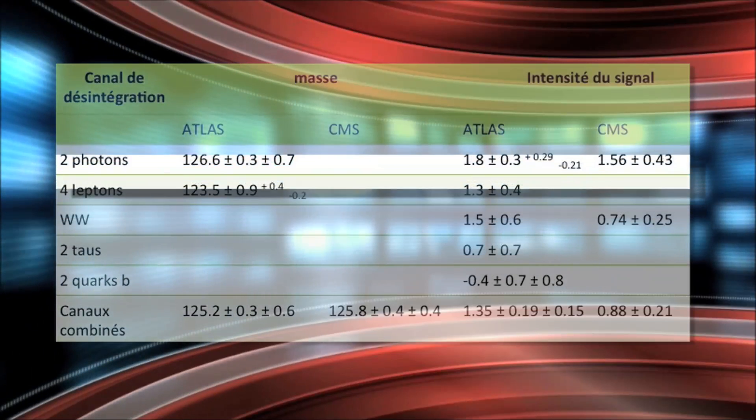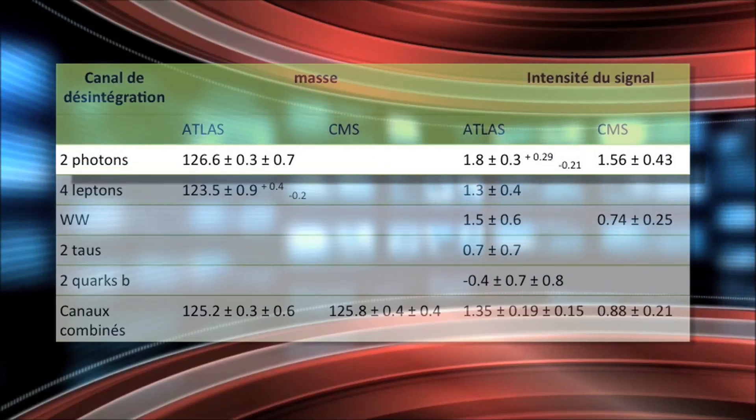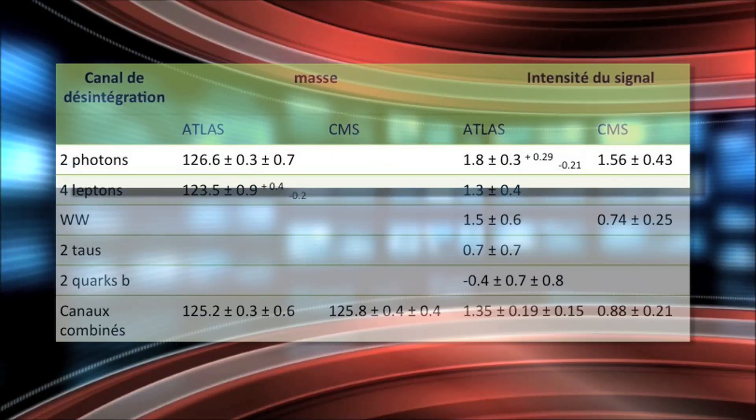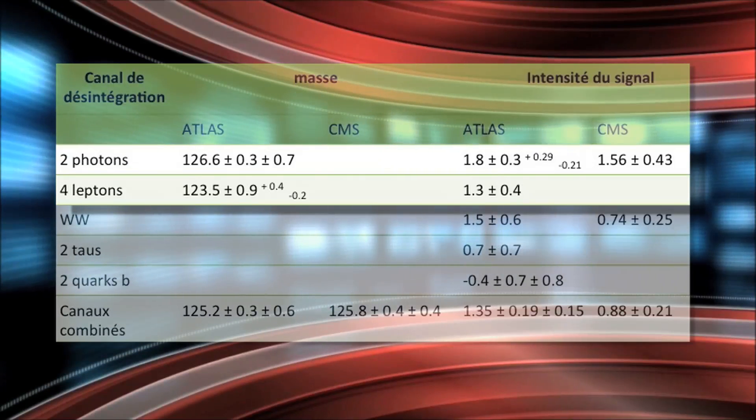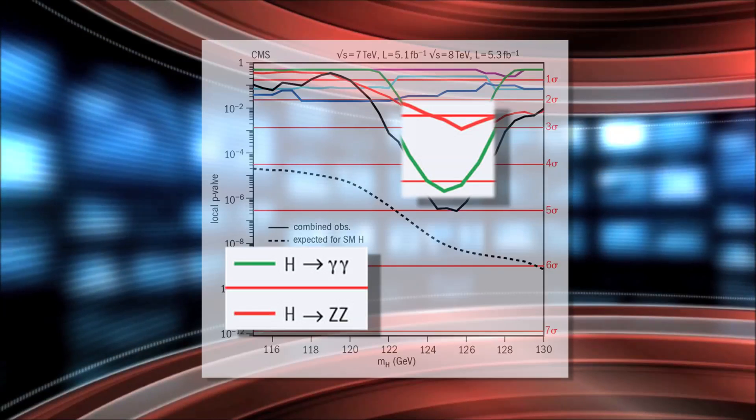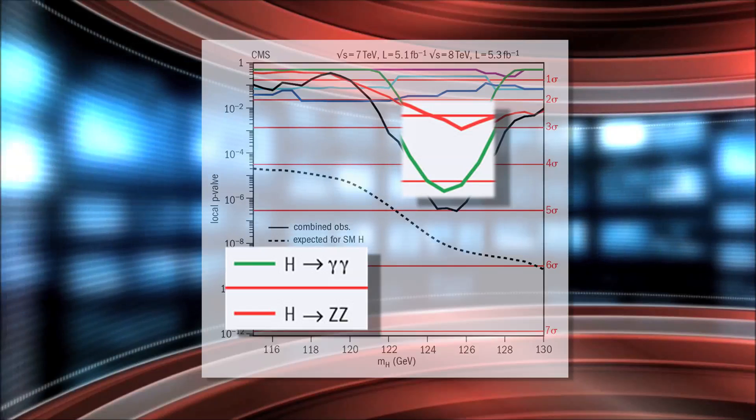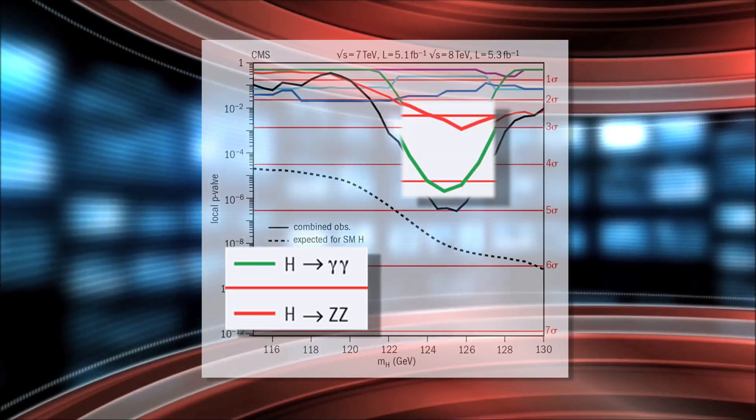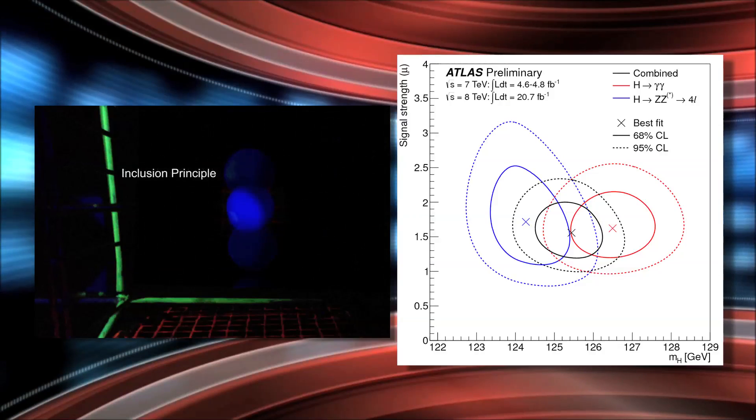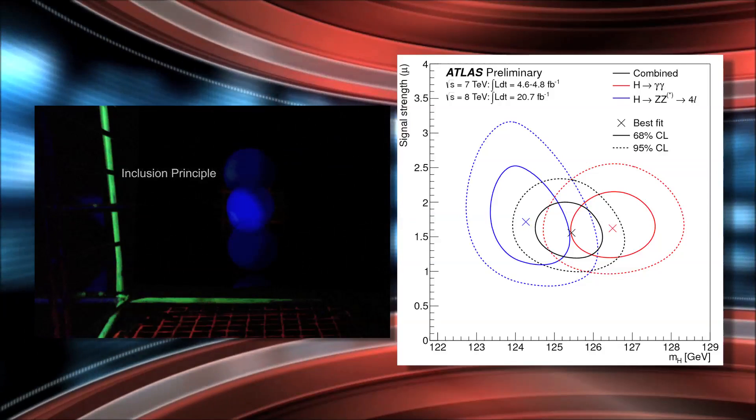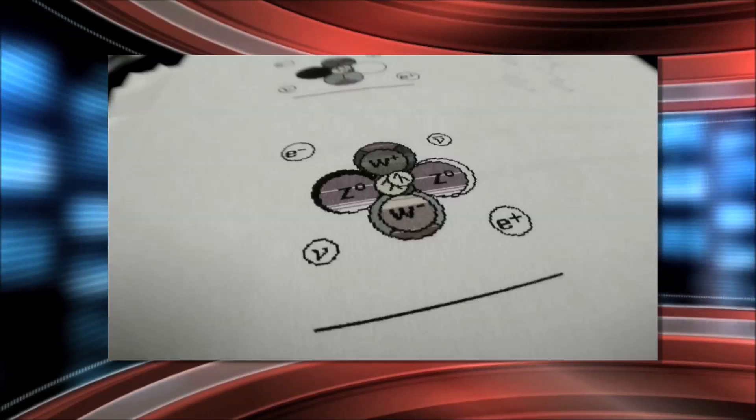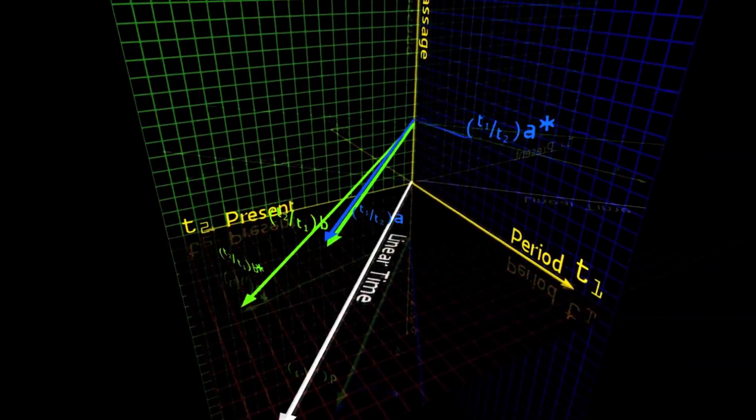Additionally, in the Atlas detector data, there is significant excess in the gamma-gamma channel over the ZZ channel. This same discrepancy shows up in the CMS data, however, the excess is reversed. This is what Wintz is calling the Higgs paradox, and it just so happens to fit his model of the Higgs boson.